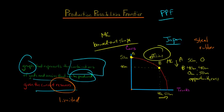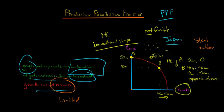Any of these points along the curve are efficient in production. The points beyond the curve — outside — are not feasible. Given the current level of resources, we cannot get to any of those points. No matter what we do, even if we decrease truck production to zero, we cannot produce 51 million cars. It's not possible, so those points are not feasible.